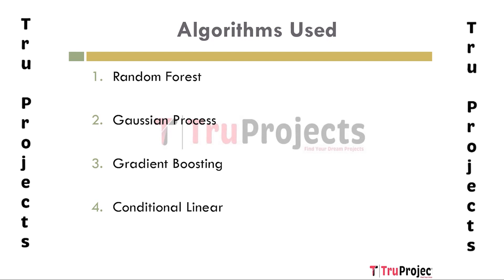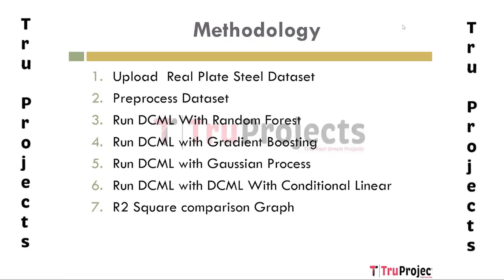Regarding the methodology, a few modules are designed for execution. The first module uploads the real plate steel dataset. The second module preprocesses the dataset using k-means clustering to generate clusters. Subsequent modules run DCML with random forest, DCML with gradient boosting, DCML with Gaussian process, and DCML with conditional linear. The final module provides an R-squared comparison graph comparing the R-squared values of all the above algorithms.